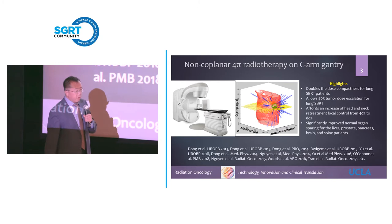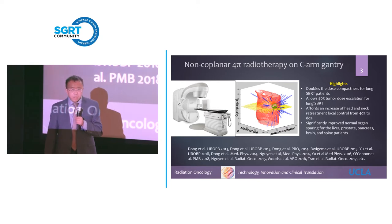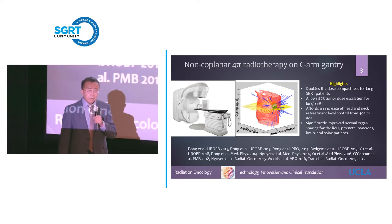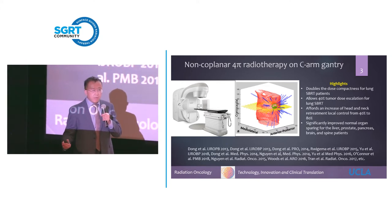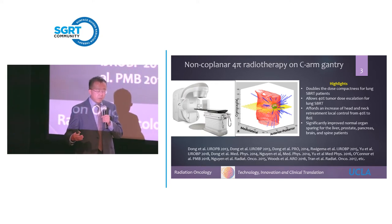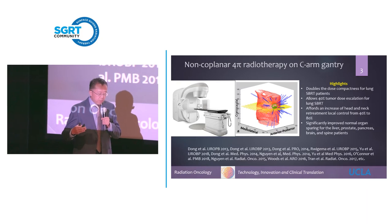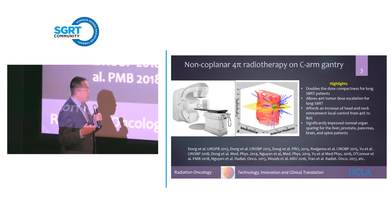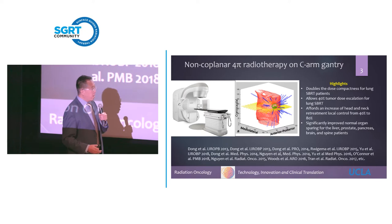For instance, for the liver SBRT patient, we showed that without compromising the target coverage, we can reduce the amount of normal liver tissue receiving 15 gray or higher by another 51 cubic centimeters.